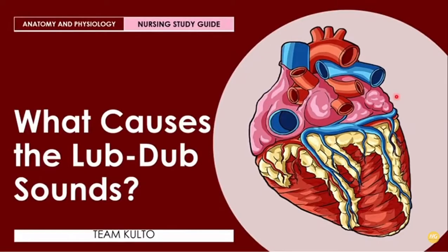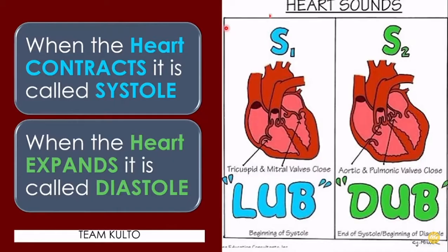So now, what causes the lub-dub sounds? When the heart contracts, it is called the systole. And when the heart expands, it is called the diastole. When the heart contracts, it is called systole, and it produces the sound which is the lub.